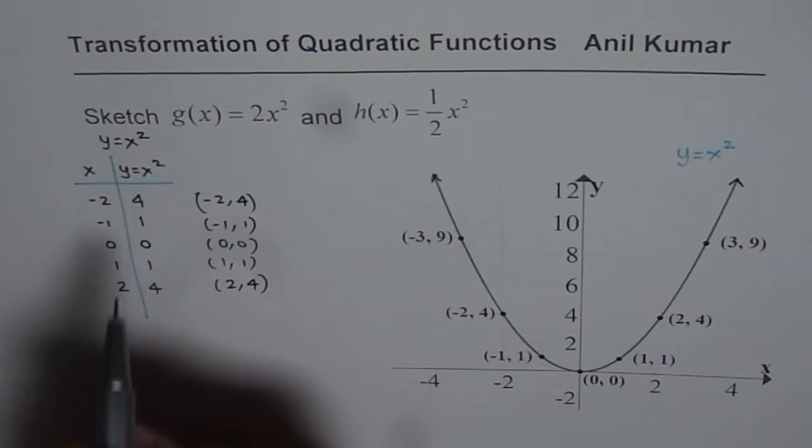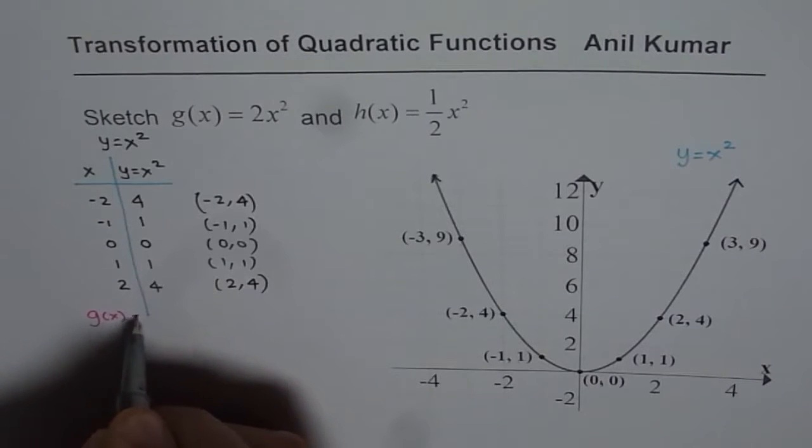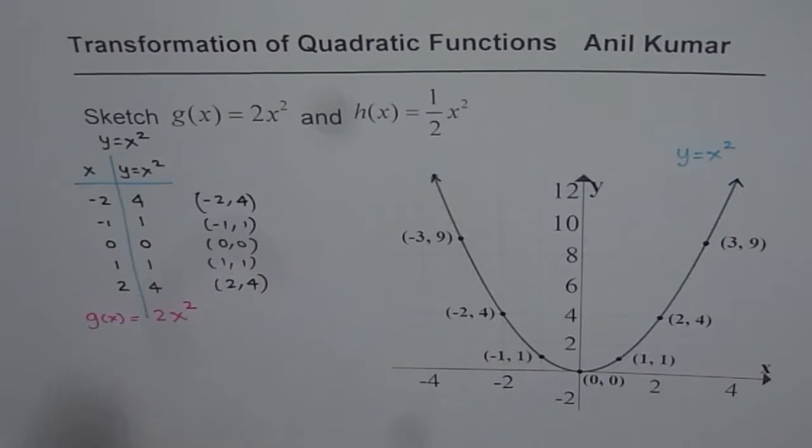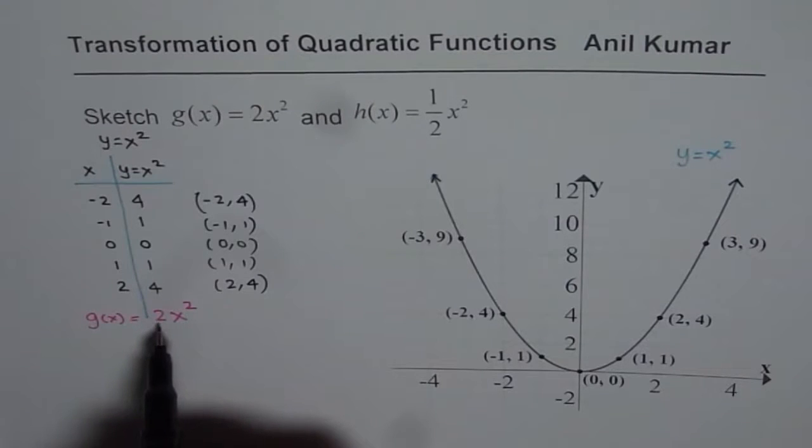So first we will do g of x which is equals to 2x square. Now in this particular function what we observe is that the y values are multiplied by 2.